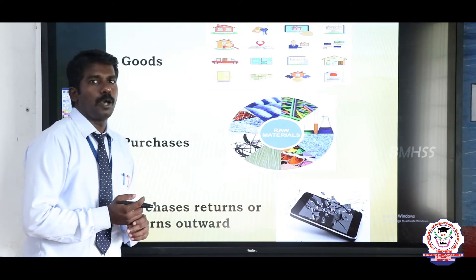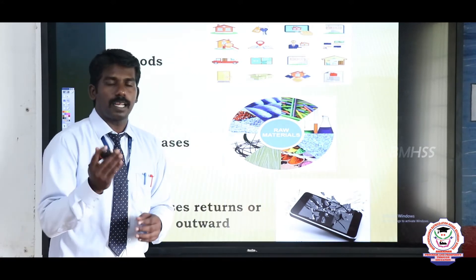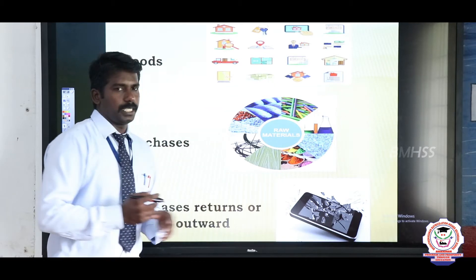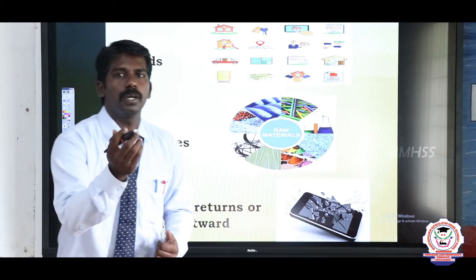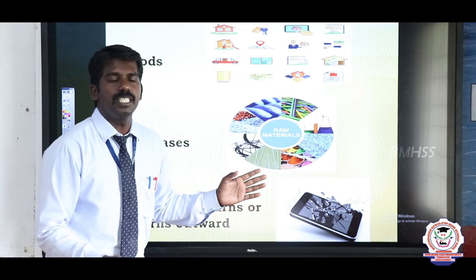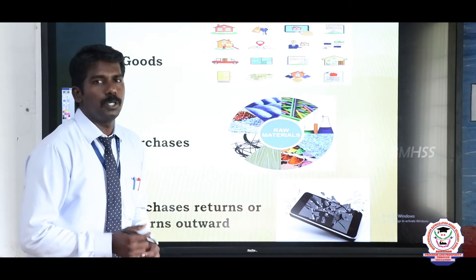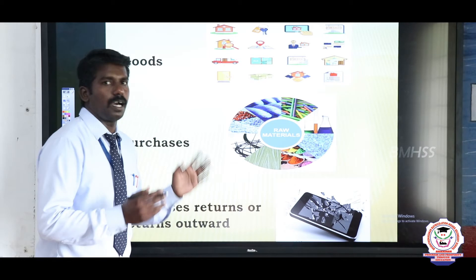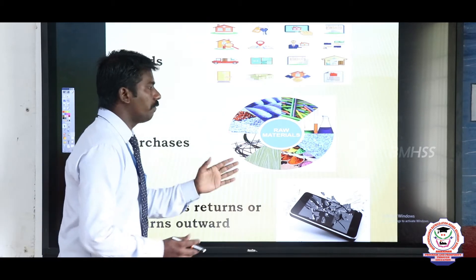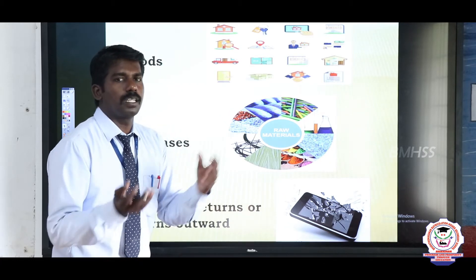Next one is purchase. What is meant by purchase? Buying of goods and raw material from the supplier is called purchase. We purchase raw material to produce finished goods or final consumer goods. The company purchases raw material from suppliers and converts it into finished goods, then supplies the customer — satisfying the consumer earns the company a profit.